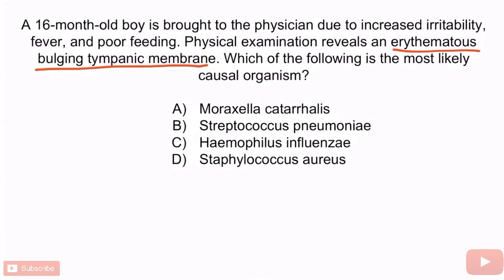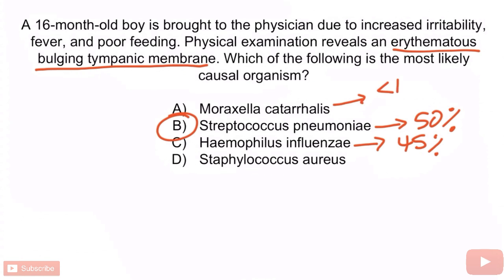With this in mind, we're asked which answer choice is the most likely causal organism. For Step 1, you need to know that Streptococcus pneumoniae is the most common cause of otitis media in children, so B is the correct answer. Streptococcus pneumoniae accounts for approximately 50% of cases, Haemophilus influenzae for approximately 45%, and Moraxella catarralis for less than 10%. Staphylococcus aureus can cause otitis media but is much less common. With that, you've learned everything you need to memorize about Moraxella catarralis.